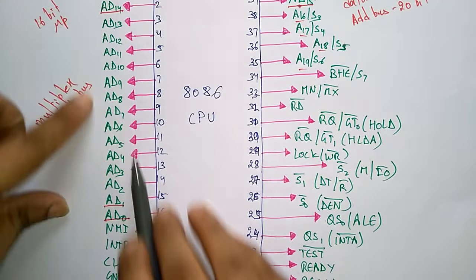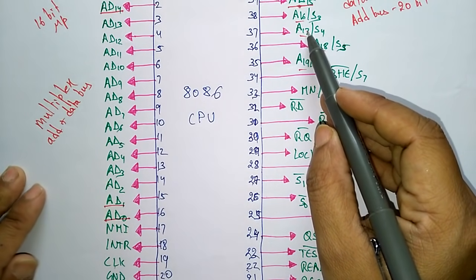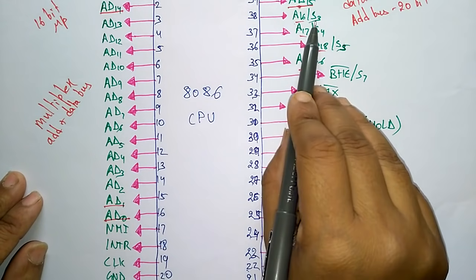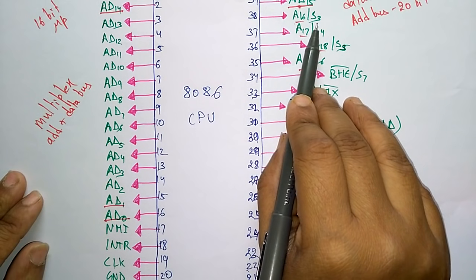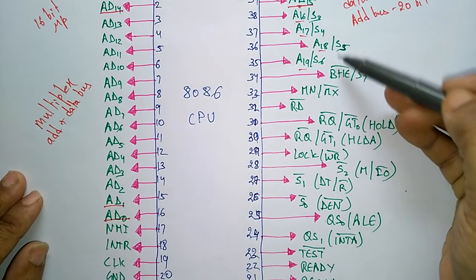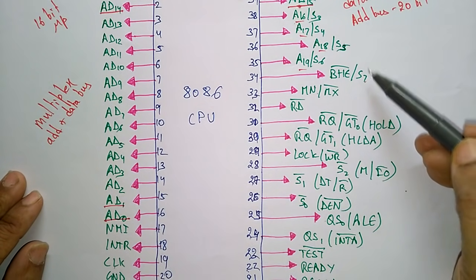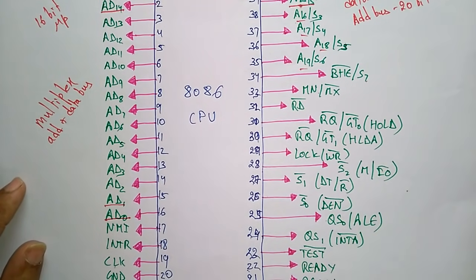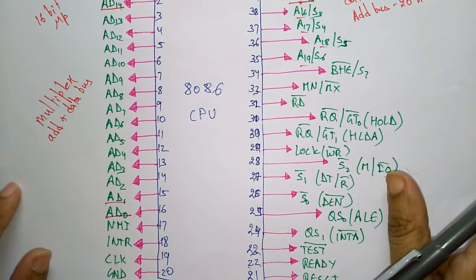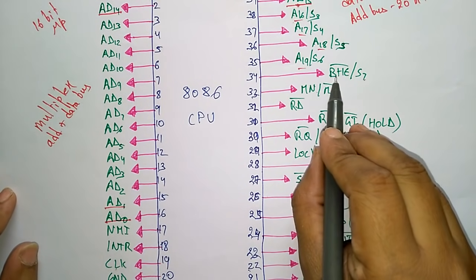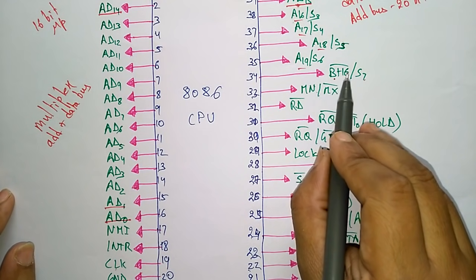The remaining 4 address lines A16 to A19 also carry status signals. For example, A16 acts either as address A16 or as status signal S3. There are status signals S3, S4, S5, S6, and S7 — five total. S0 and S1 are used for specific functions.